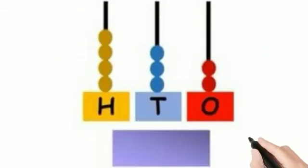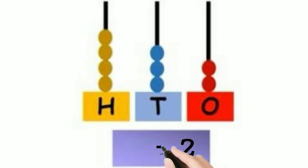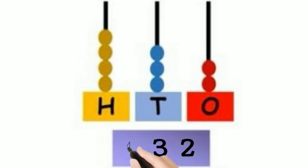Next question. In the ones place there are 2 beads: 1, 2 — so write 2. In the tens place there are 3 beads: 1, 2, 3 — write 3. In the hundreds place there are 4 beads: 1, 2, 3, 4 — so write 4. What is the answer? 432.